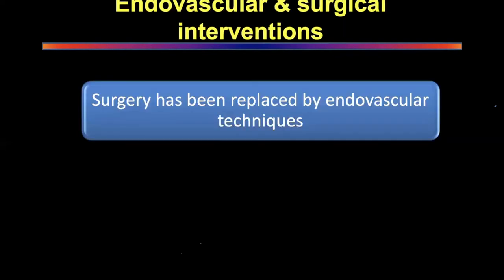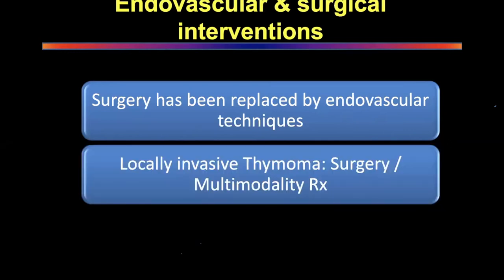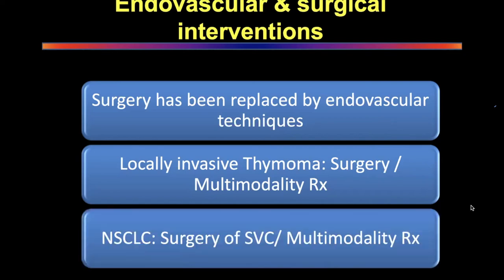Surgery has been almost completely replaced by endovascular techniques — surgical interventions are done very rarely in the current era. SVC surgery has gone down quite dramatically. The only place where SVC reconstruction still has a role is in locally invasive thymomas: chemotherapy is given first to reduce tumor size, then thymoma resection plus or minus SVC reconstruction is performed. Occasionally in smaller thymomas with SVC involvement, thymoma plus SVC resection is done first and chemotherapy given afterward — all determined by MDT discussion.